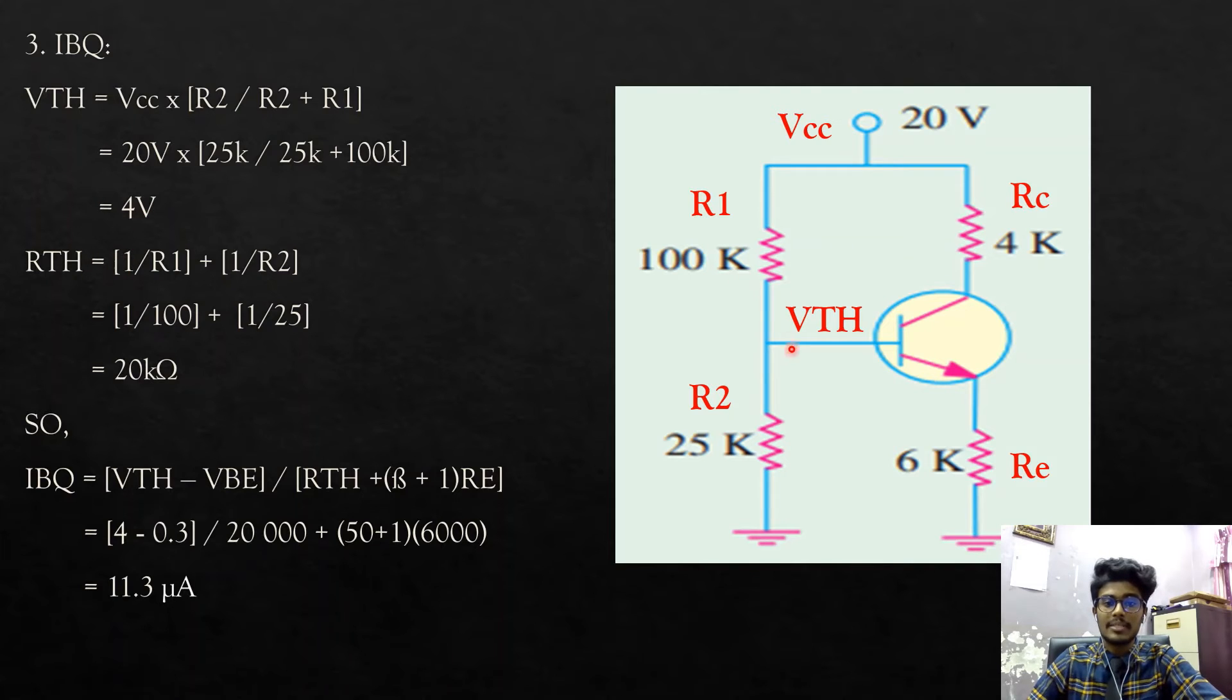Next, we must find the resistance that supplied to the base of the transistor, which is R1 and R2. But, R1 and R2 is connected parallelly, so we must use parallel formula to get the resistance, which is 1 over R1 plus 1 over R2, which is 1 over 100k plus 1 over 25k, we will get 20kohm.